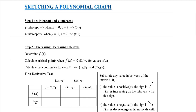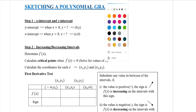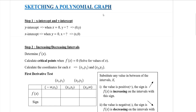For sketching a polynomial graph, let's say f(x) equals x cubed plus 2x squared minus x plus 1 for example. The first thing you need to do when given a function is determine the x-intercept and y-intercept. The y-intercept is when x equals 0. After you find the value of y, please write it in terms of coordinate — it's easier for you to plot later on.